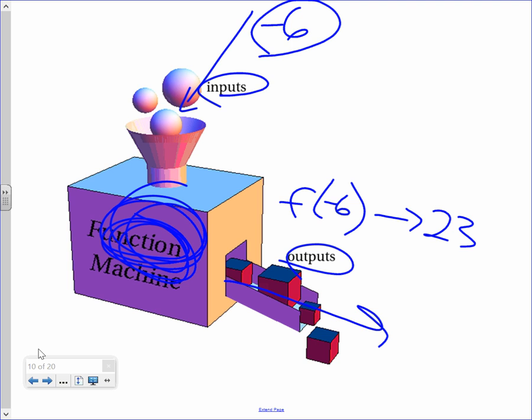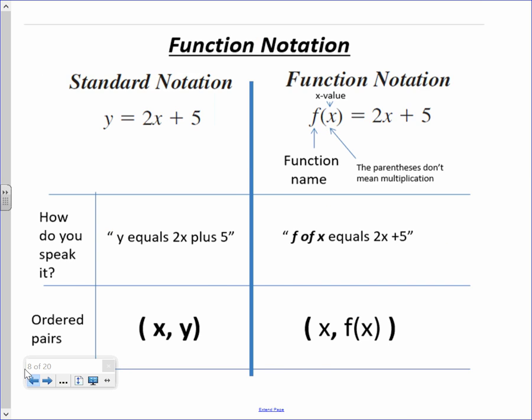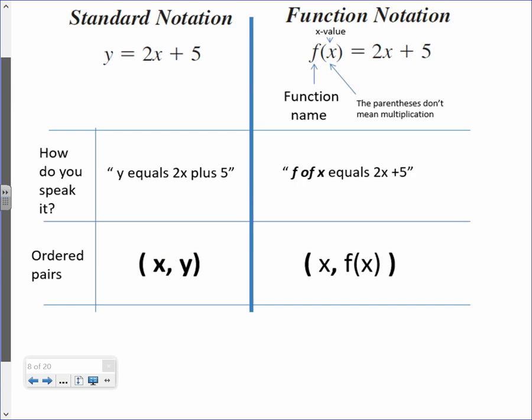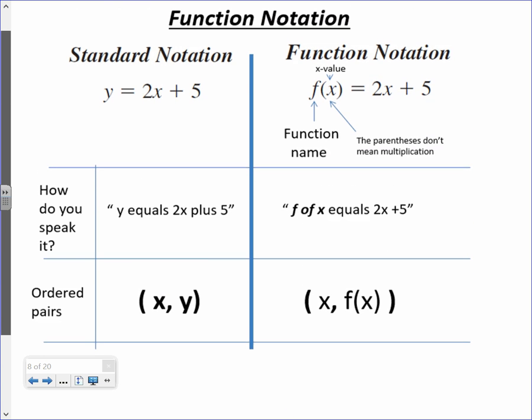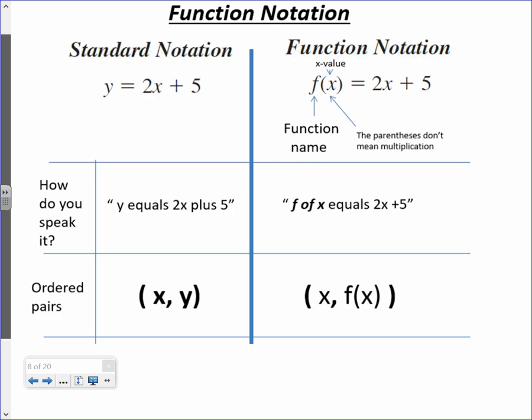Now coming back over here, look at your handout. Look at the next row. How do you speak it? How do you speak this in English? How do you speak that? Yeah, okay. So I want us to be speaking the same language. When you see something like that, you've got to know how to say it. That's how you say it. Next row, look at next row, look at the ordered pairs. You have to say it that way.